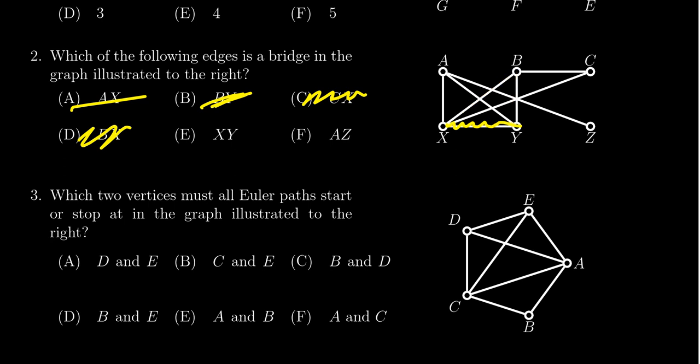So by process of elimination, looks like it's got to be F, but let's just check it. If you were to remove F, the answer F which is AZ, if you took away AZ, then the vertex Z would be isolated from the rest of the graph. There is no path between A and Z anymore.